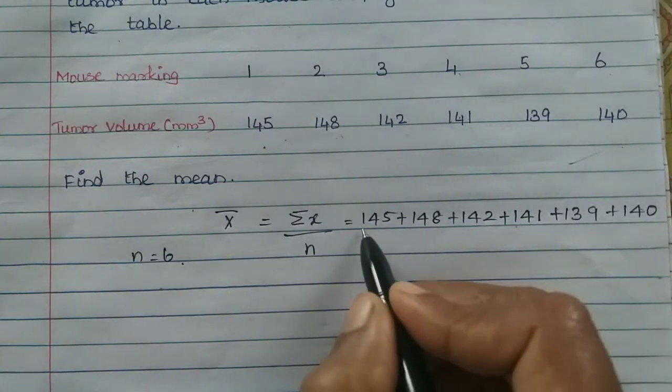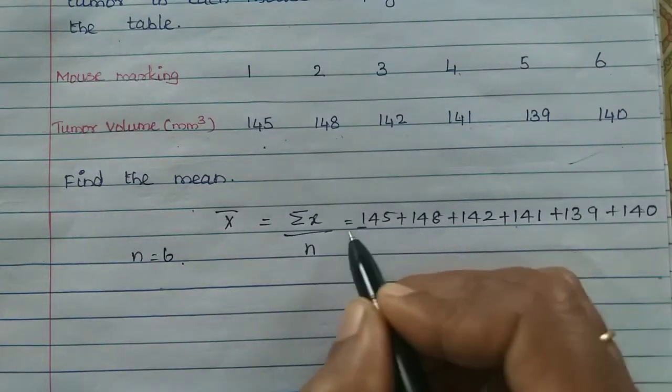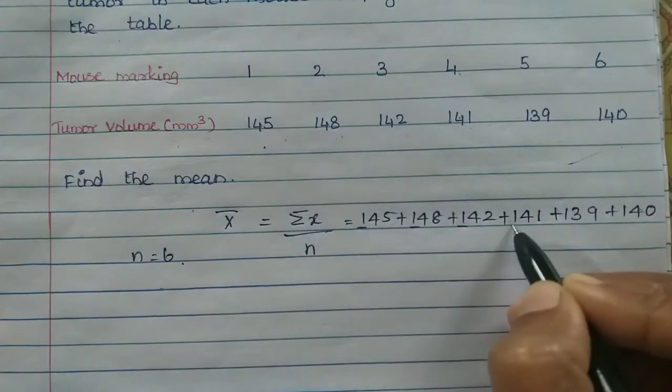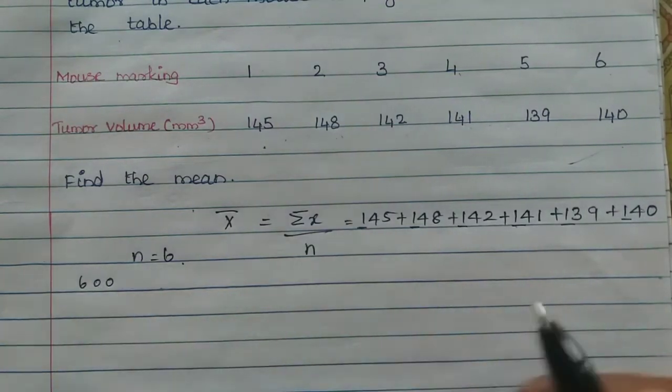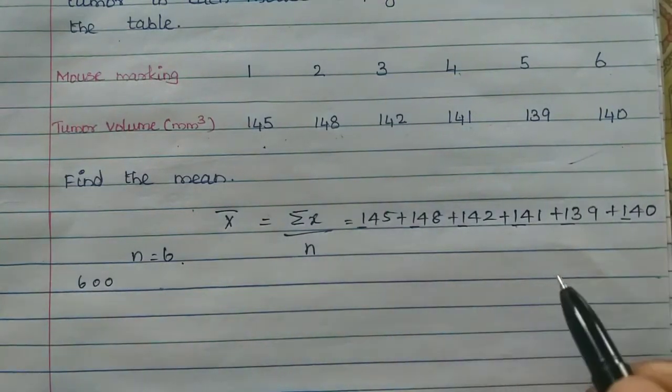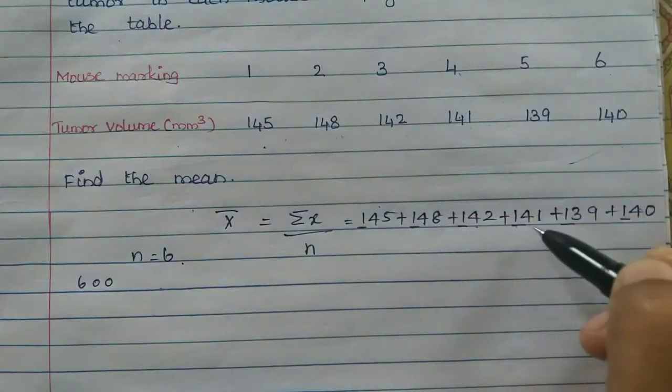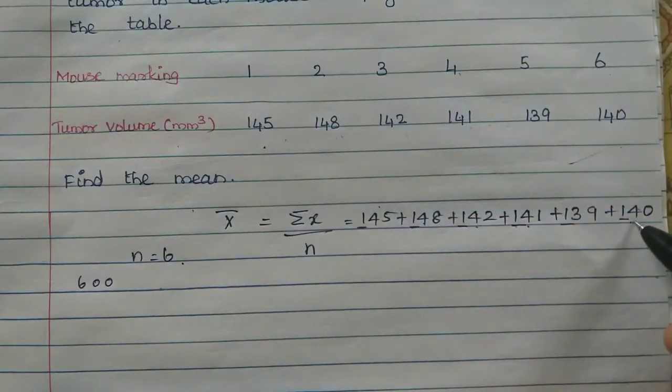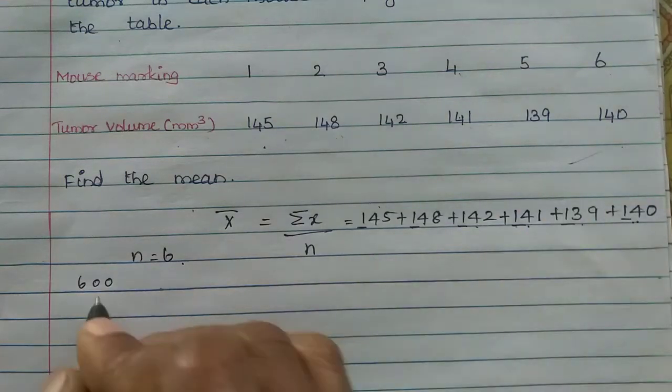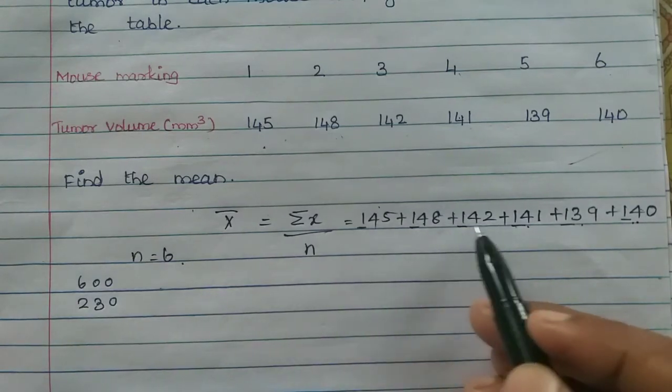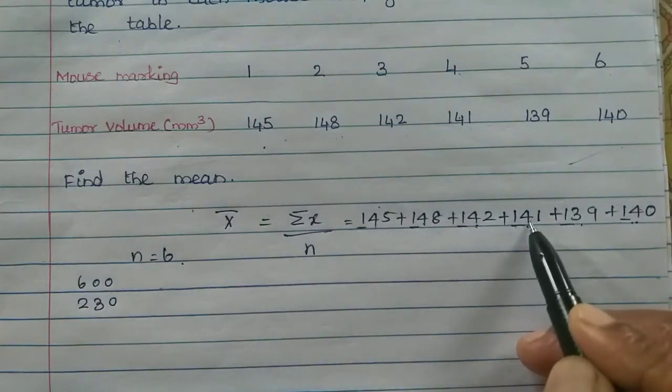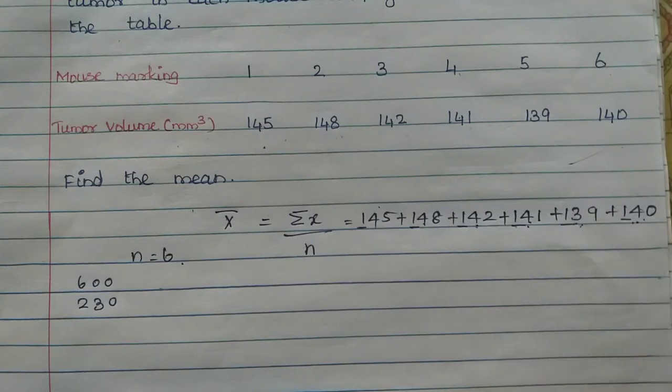Now, I'll tell you, in the hundreds place, it is 100, 200, 300, 400, 500, 600. So 600 is there. If you look at the tens place, there is 4, 4, 4, 4, 3, 4. That's 5 values of 40. 5 into 40 is 200. 200 plus 30 is 230.